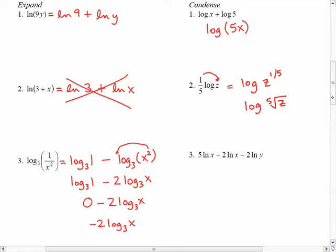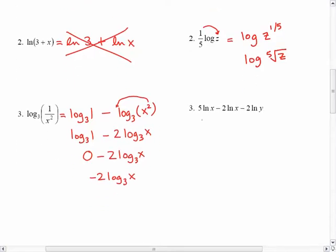And finally, in the last one, I have a lot of powers. So this would become ln of x to the 5th minus the ln of x squared minus the ln of y squared. And then I could condense those all into one log. And then it's x to the 5th is being divided by both x squared and y squared, which means both of those will end up in the denominator.